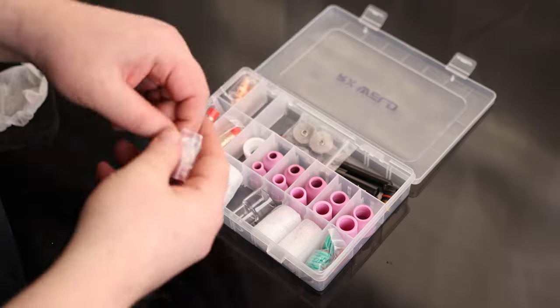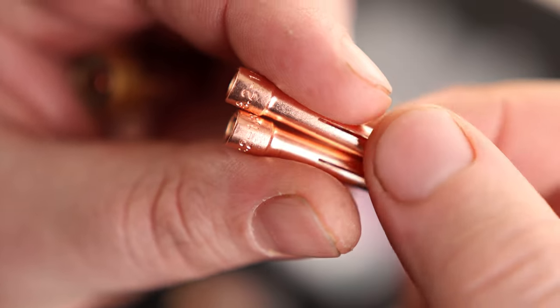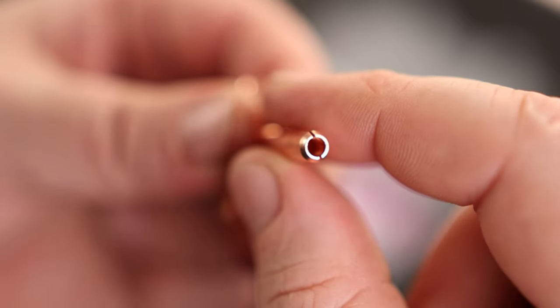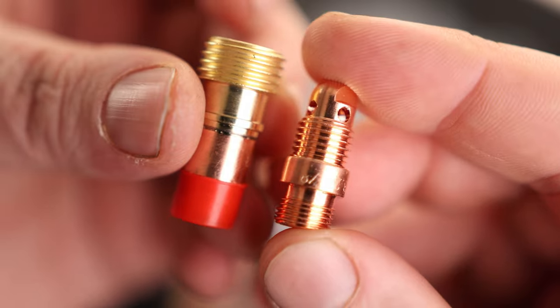So on the top corner here, we have our collets. We can see that it is actually written on there, one-eighth on the top, so we know exactly what that's for. And of course, we can see the size of the hole. And then we have our collet bodies.